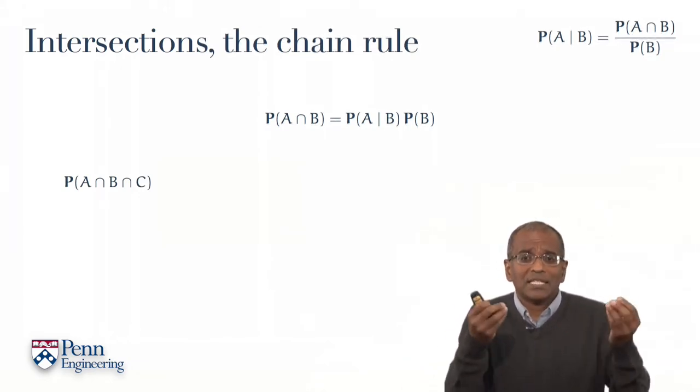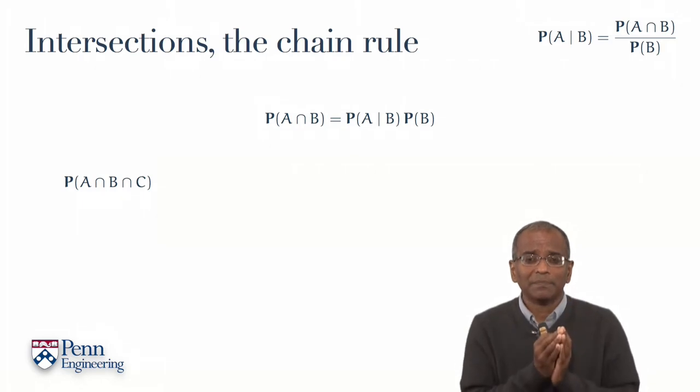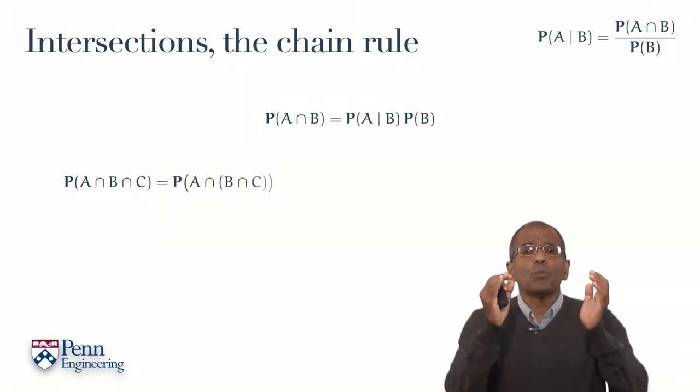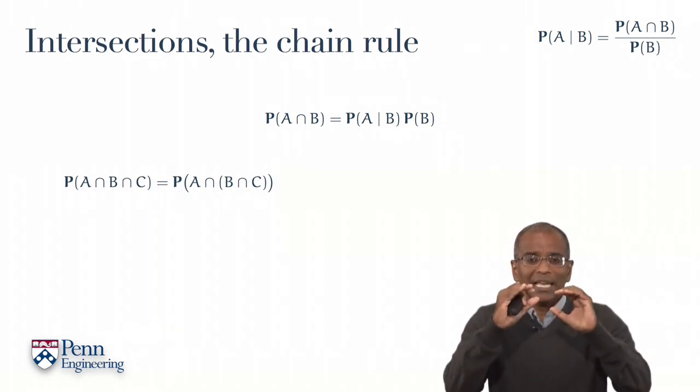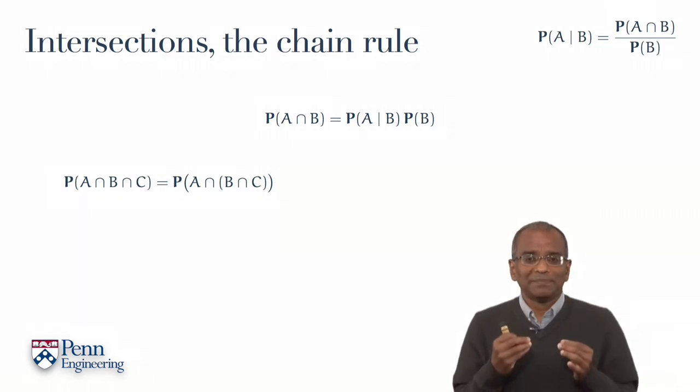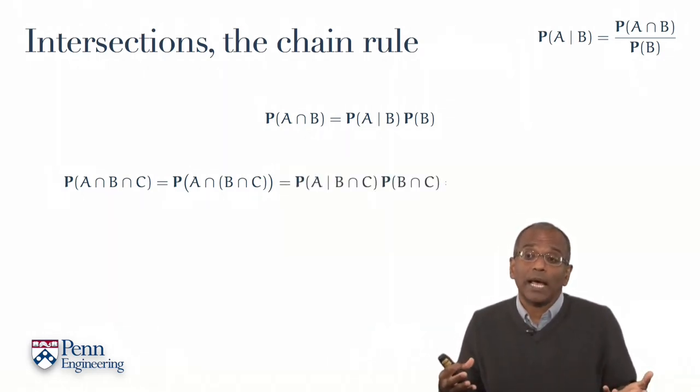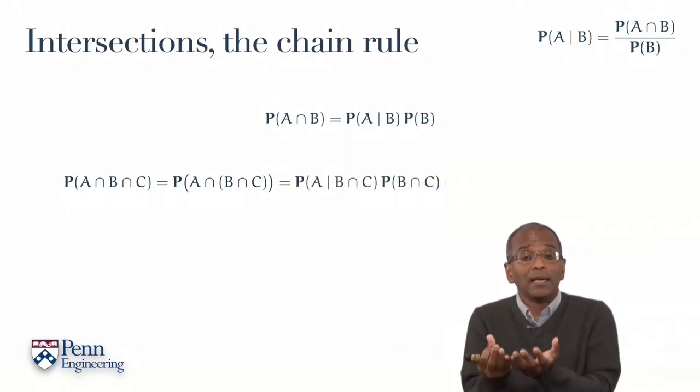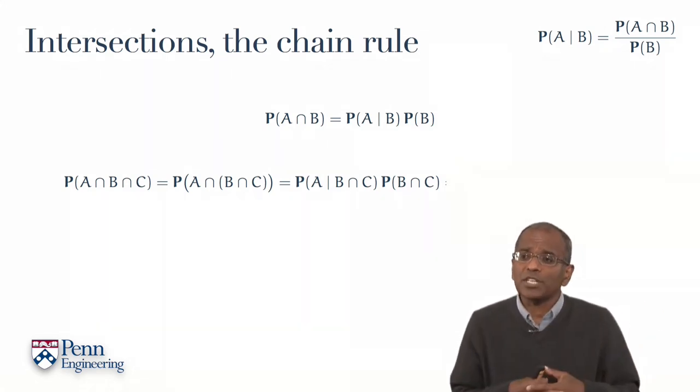Suppose we have events A, B, and C in the probability space. I want to say something about the probability of A intersection B intersection C. If we group two of the events, say B and C, together, then we have a composite event, B intersection C. If the role of B is now taken over by B intersection C, we simply apply the definition of conditional probability and write this down as the probability of A given this ancillary event B intersection C times the probability of B intersection C.